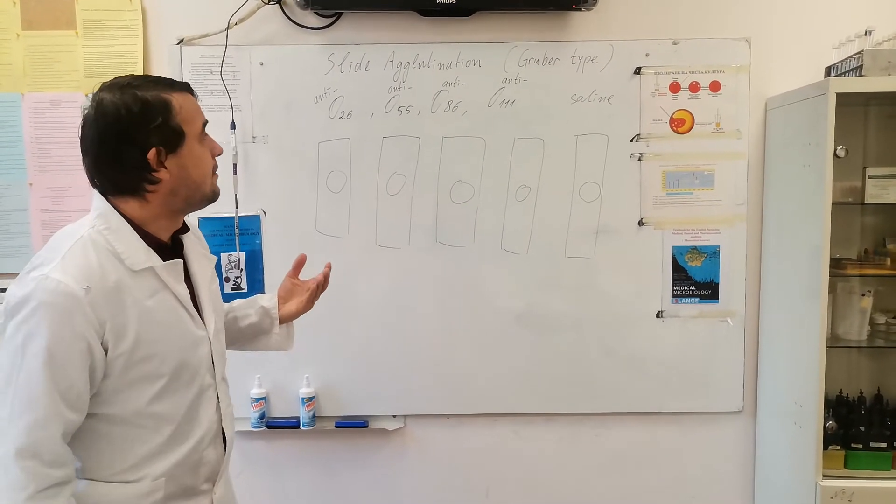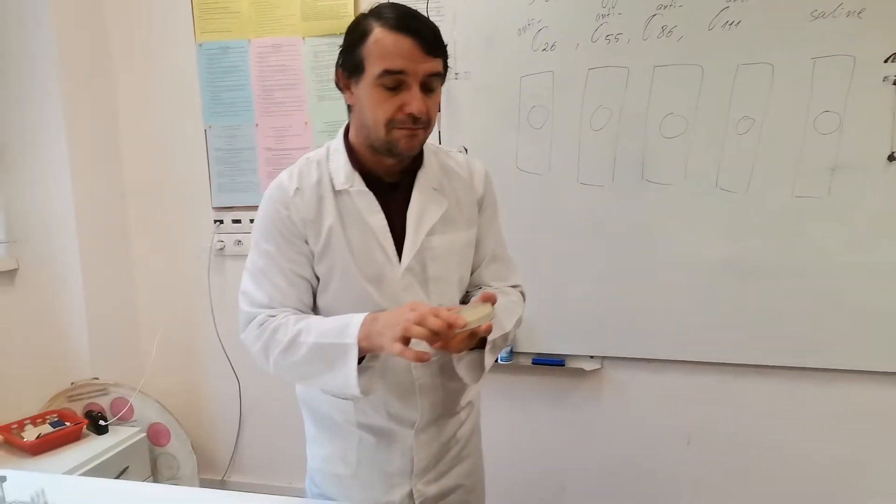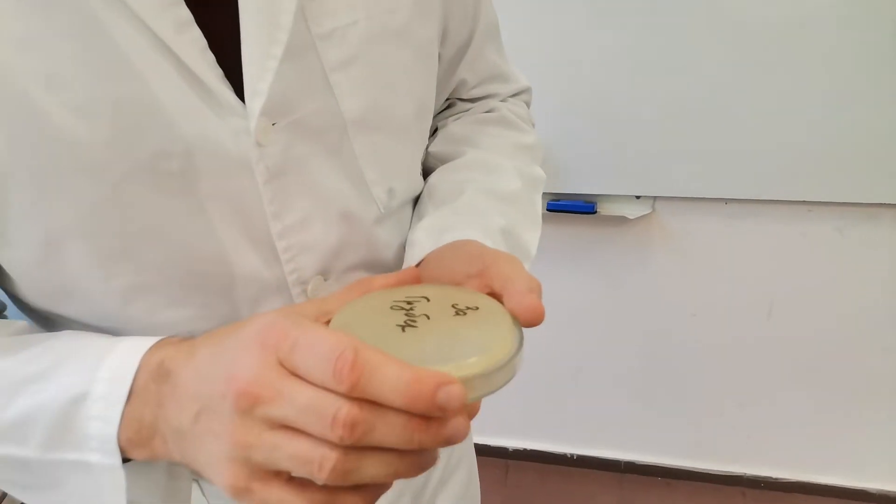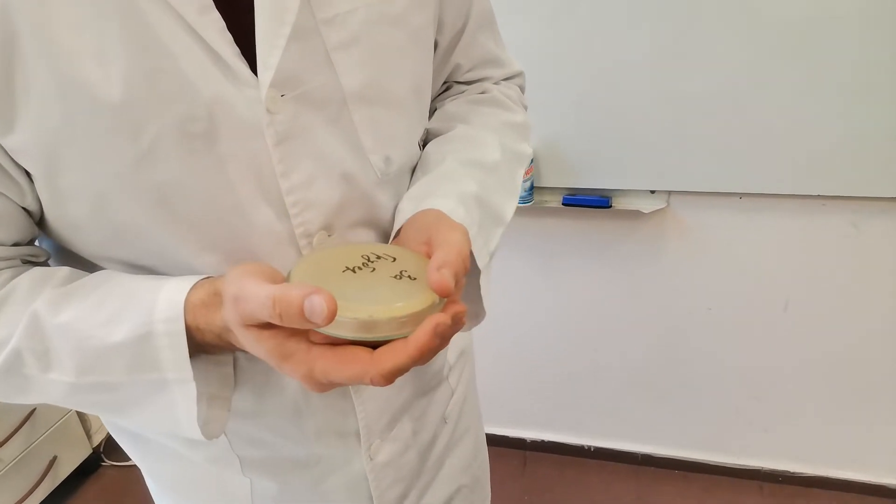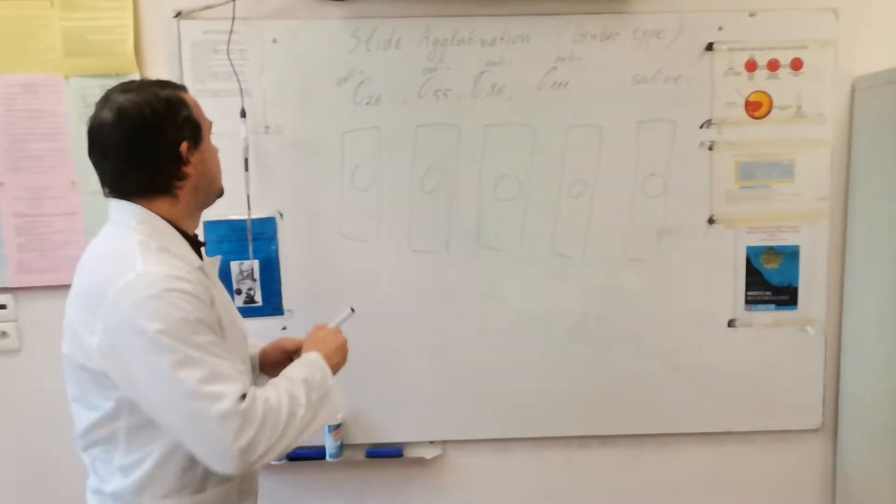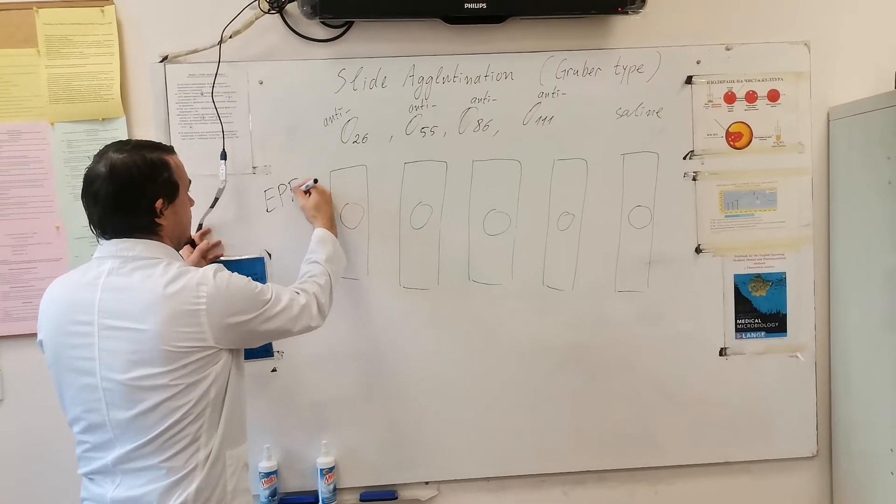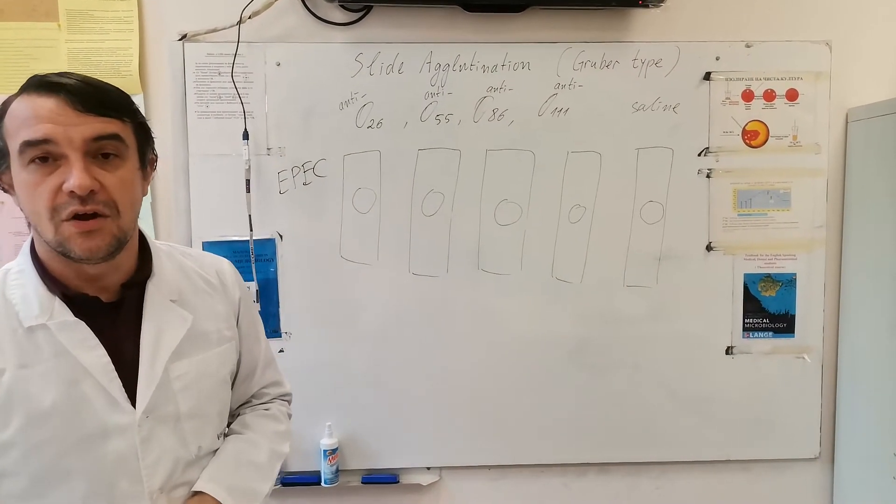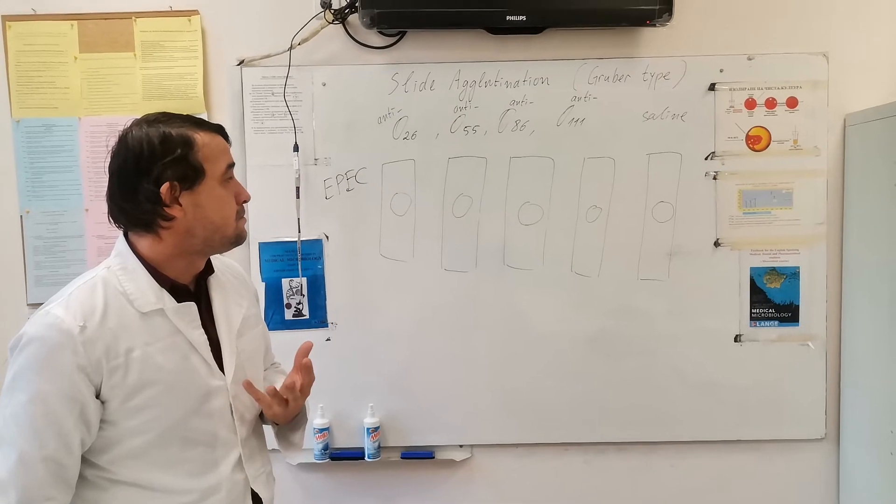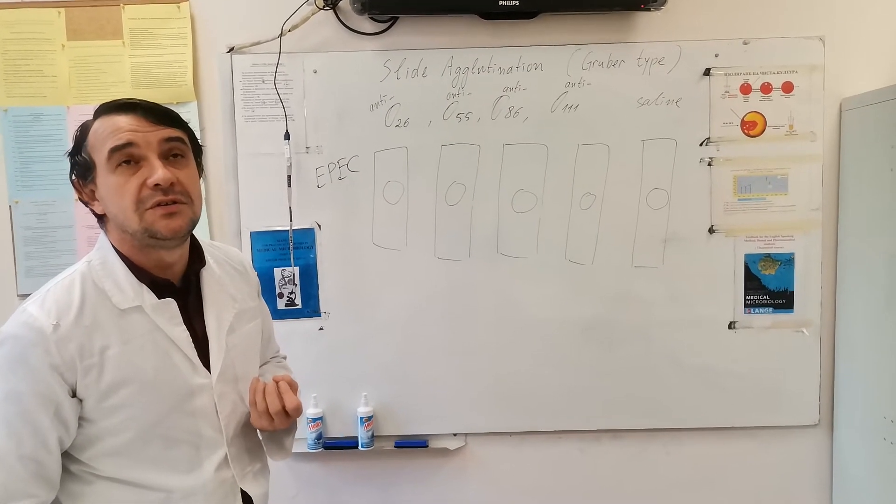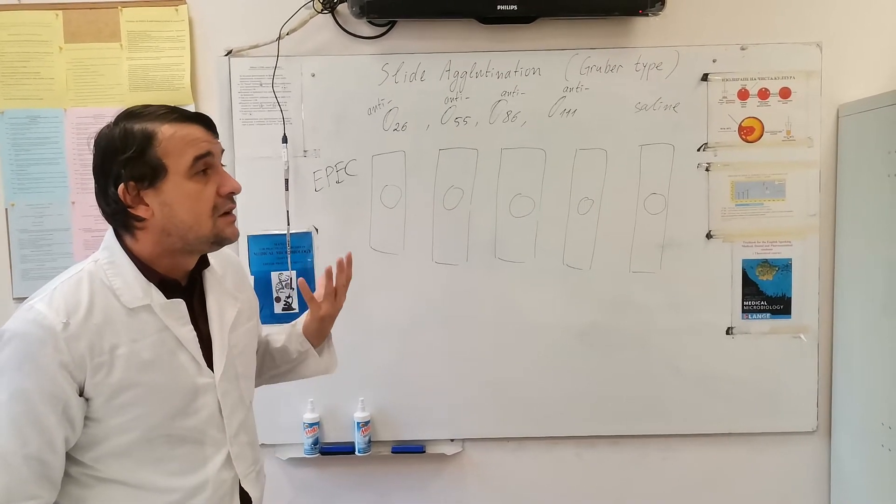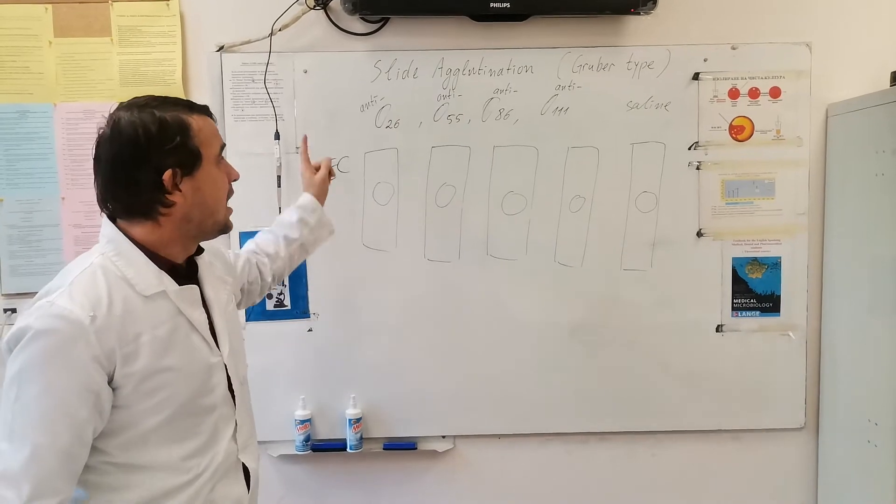Now, let's have an example. Here is a pure culture of E. coli, Escherichia coli, which you know is a normal flora of our intestinal tract. However, there are specific serotypes that are called EPEC, enteropathogenic Escherichia coli. These strains are pathogenic, so they do not constitute a part of the normal flora. The only difference between the normal Escherichia coli are their antigens.